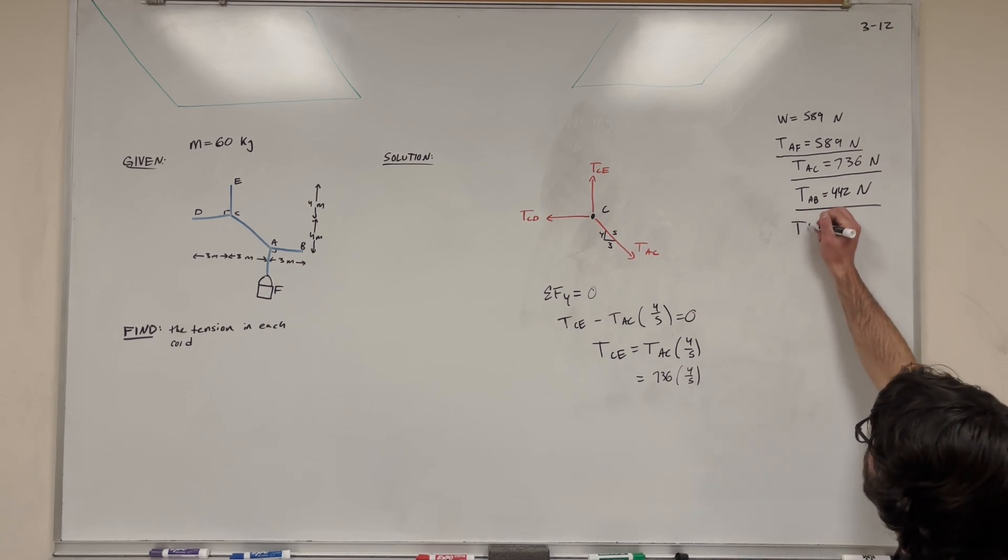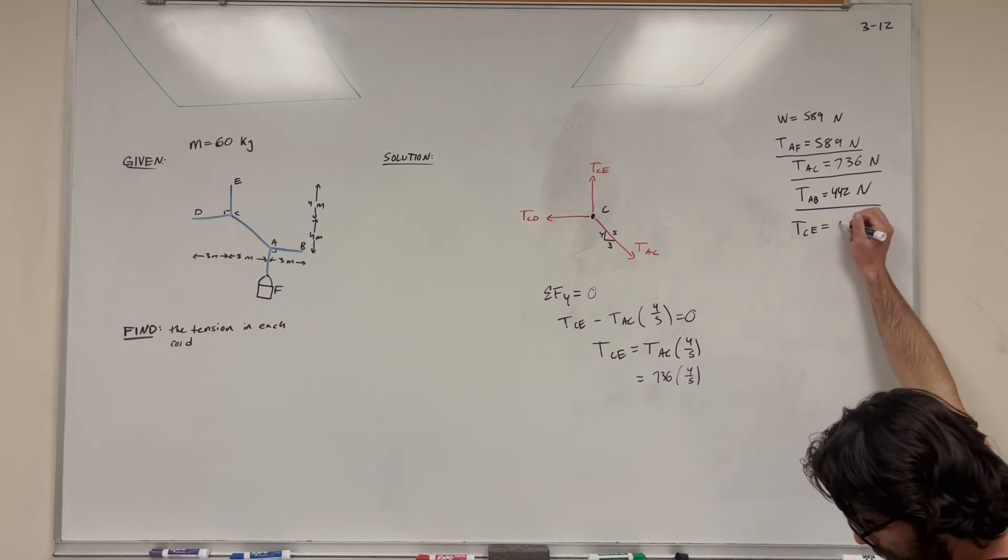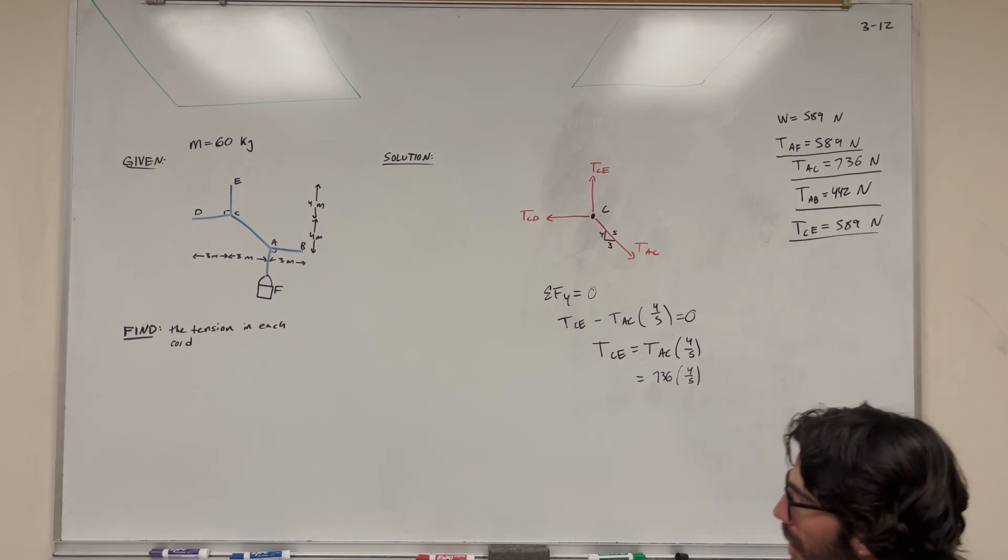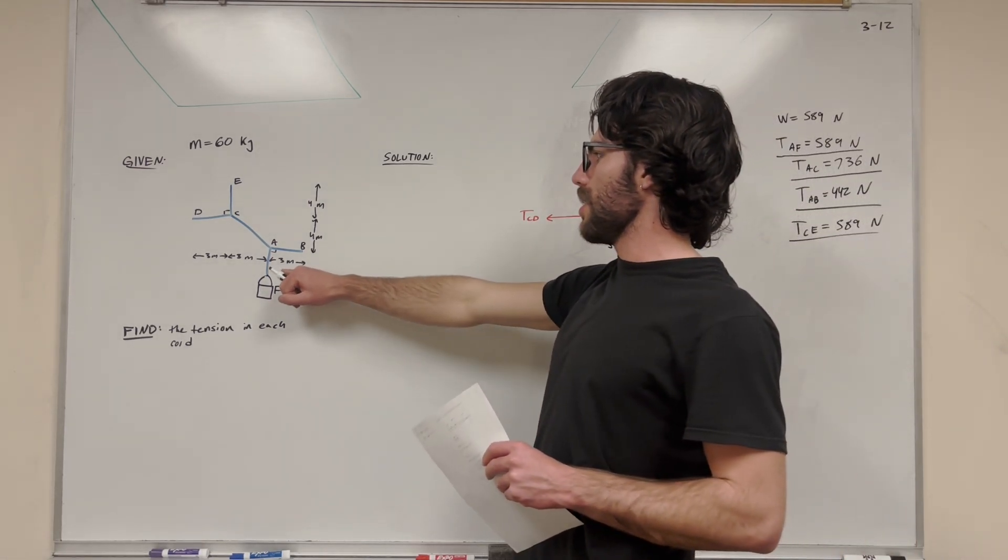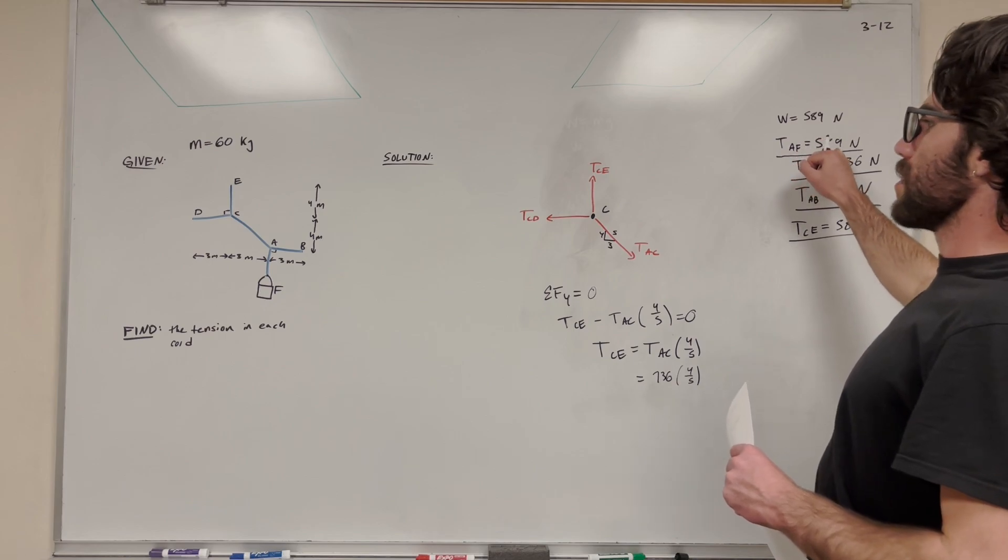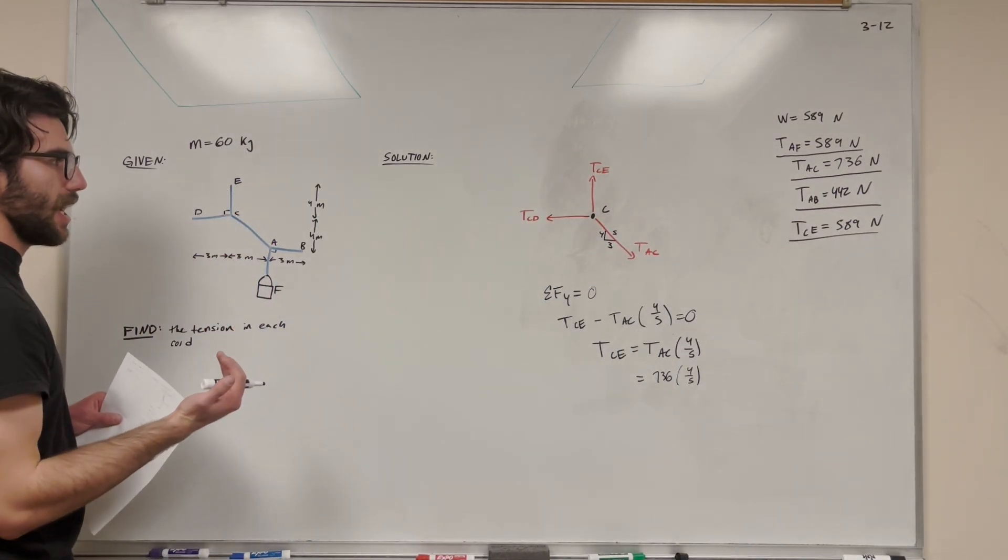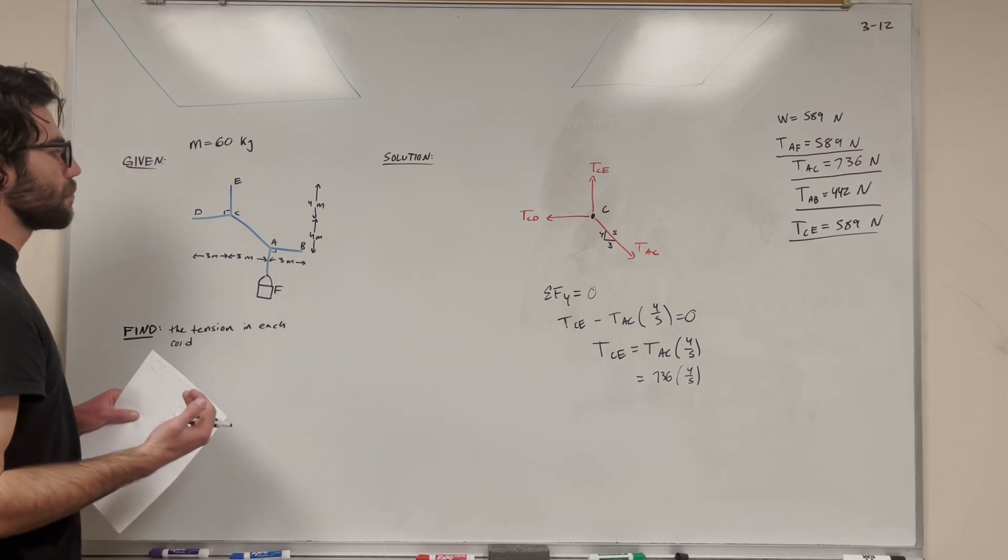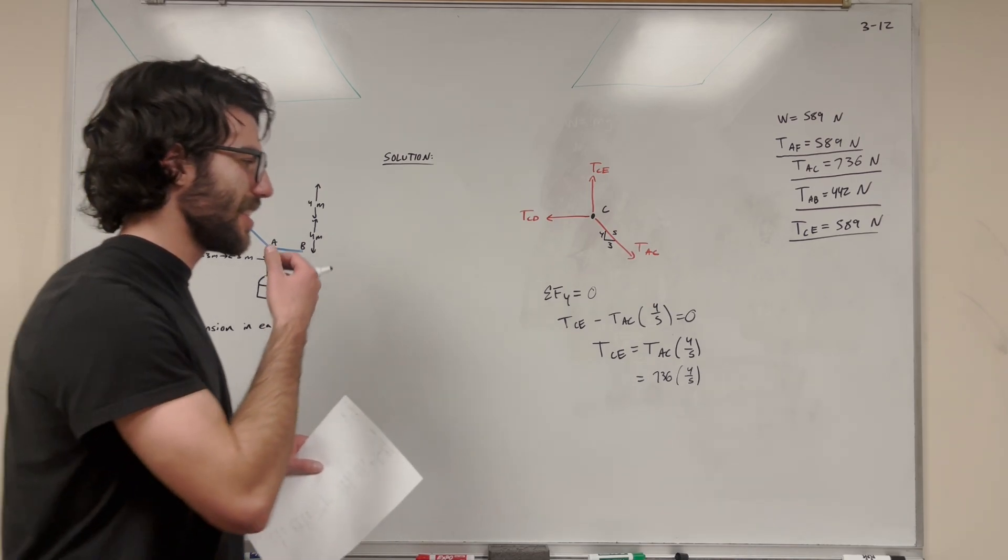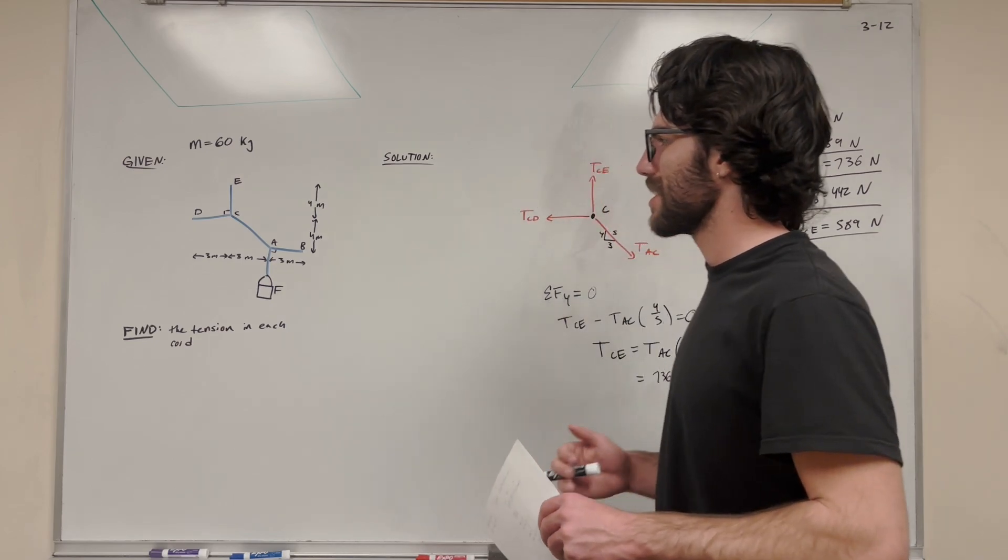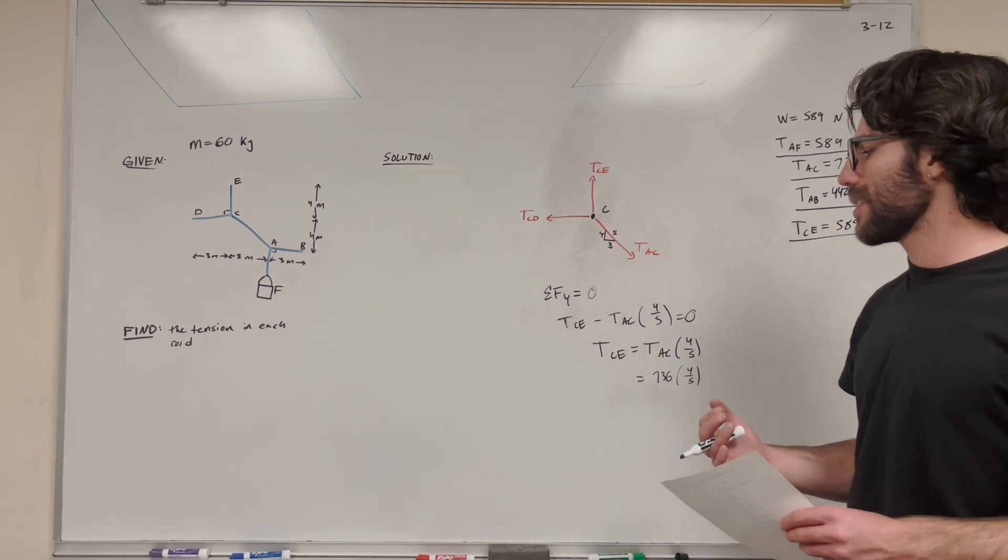And we're going to find that tension CE is equal to 589 newtons, which is pretty cool if you think about it because we found that this tension, AF, is also 589 newtons. So the tension in AF and the tension in EC are the exact same, which might actually make sense. It's kind of intuitive. You really think about it a little harder, but I guess it's something you wouldn't be able to know without doing the math.